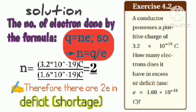Is it excess or deficit? Since the conductor has a positive charge, the electrons are in deficit or shortage, not excess.